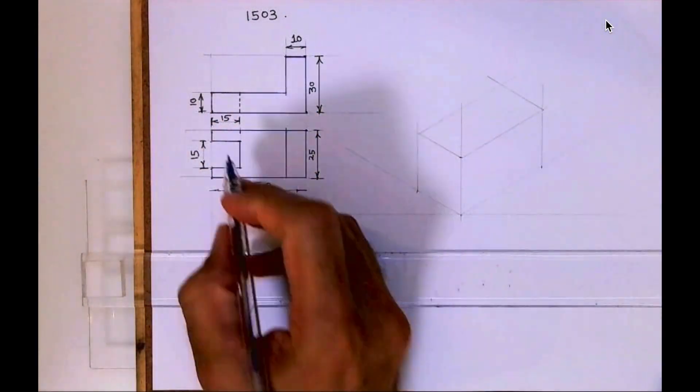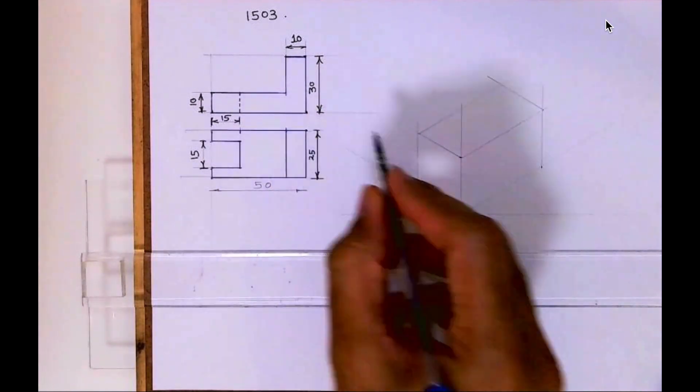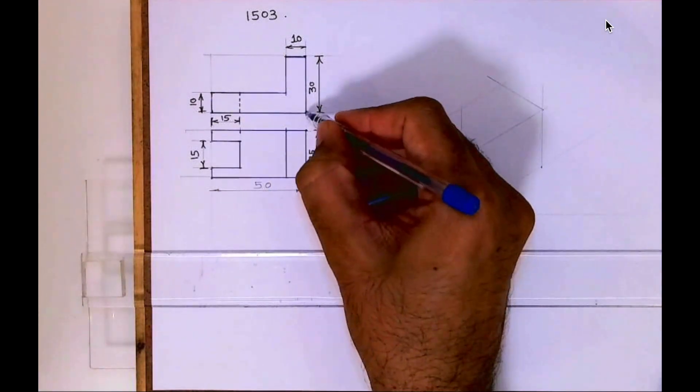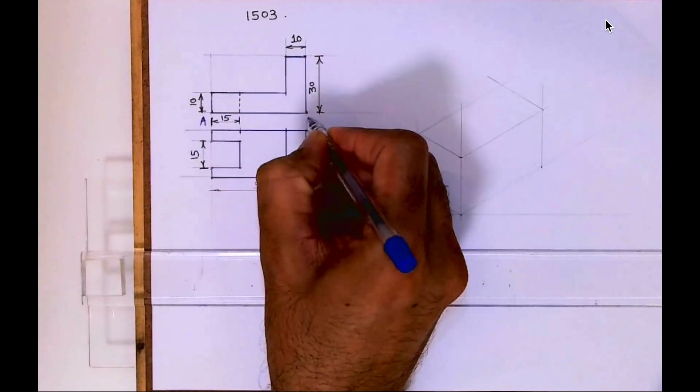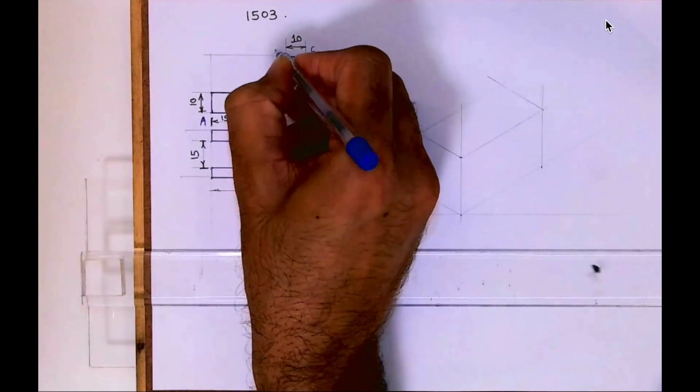After drawing this box, if you see the front view, this entire thing is one unit. See, 50 by 30. I'll label this as A, then B, C, D, E, F.